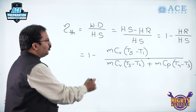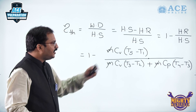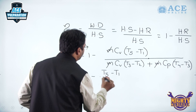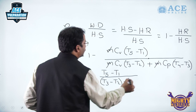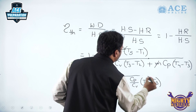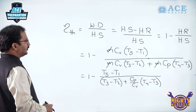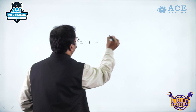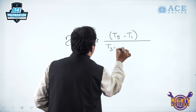Mass cancels in both numerator and denominator. Taking C_V into the denominator gives: η = 1 − (T5 − T1) / [(T3 − T2) + γ(T4 − T3)], where C_P / C_V = γ is the adiabatic index. This is the thermal efficiency expressed in terms of temperatures.